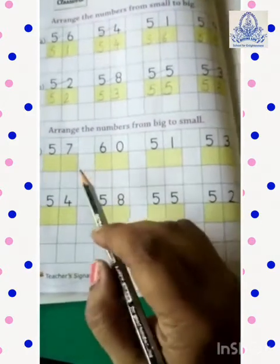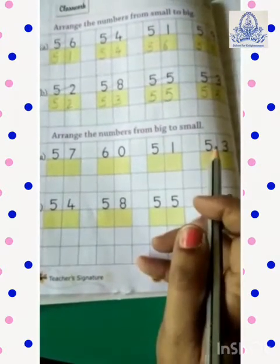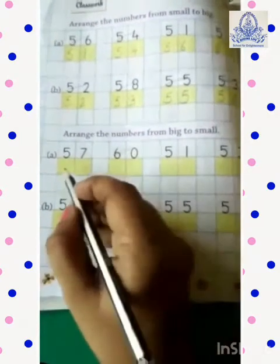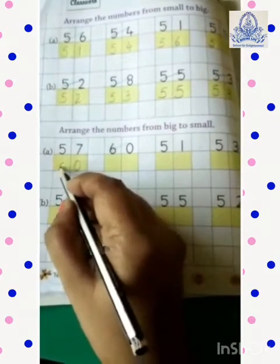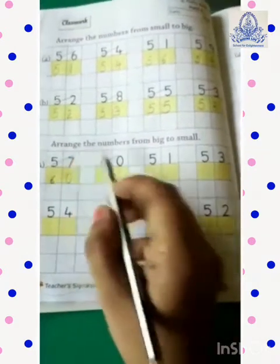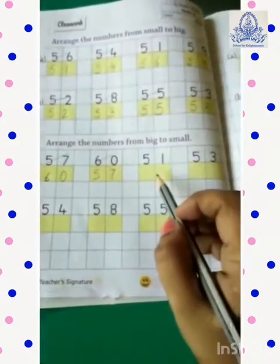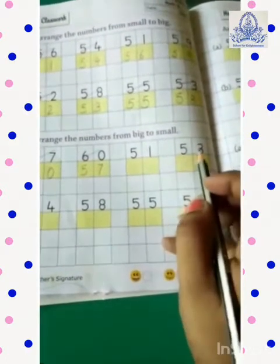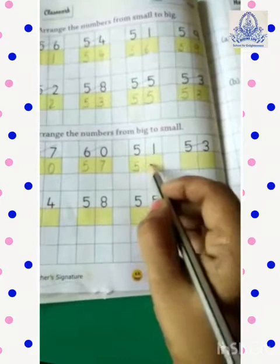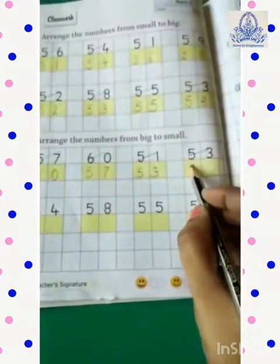Now, let's see the numbers. Numbers are 57, 60, 51 and 53. So, which is the biggest number? Yes, it's 60. So, write first 60. Next one? Yes, it's 57. So, write 57. Now, numbers are 51 and 53. So, which one is the big number? Yes, 53. So, write 53. Next one? 51, 51.